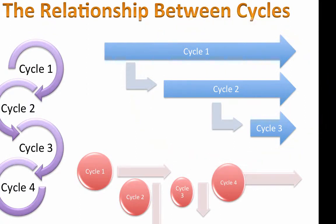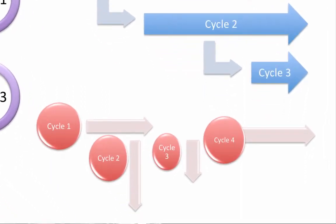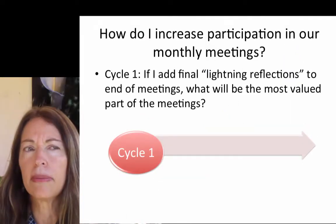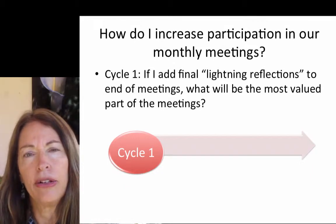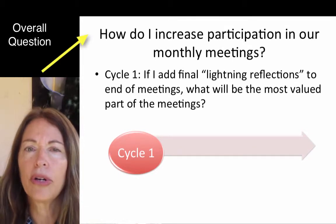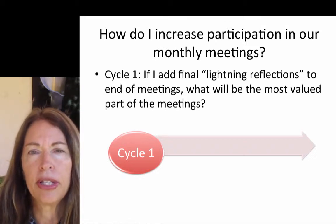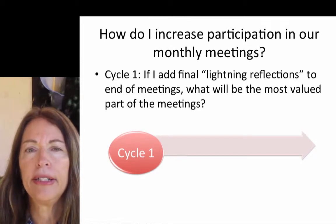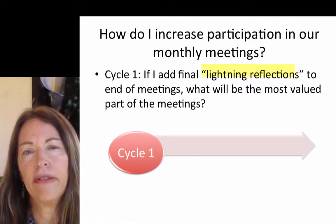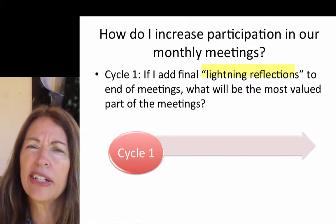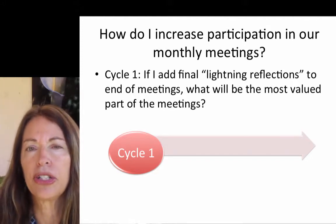That's not always the case because sometimes cycles don't work. Suppose you are a director, a principal, or a leader of a team and you have monthly meetings, and your overall action research question is how can I improve the involvement of the people on my team in the monthly meetings. Maybe for the first cycle you put a lightning reflection at the end of the meeting, where everybody in one sentence or less tells the group what they found valuable, and that turns out to be really successful.